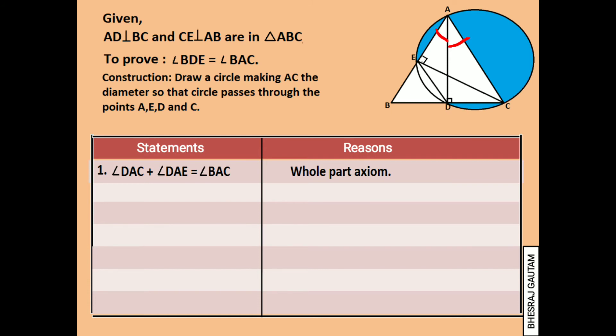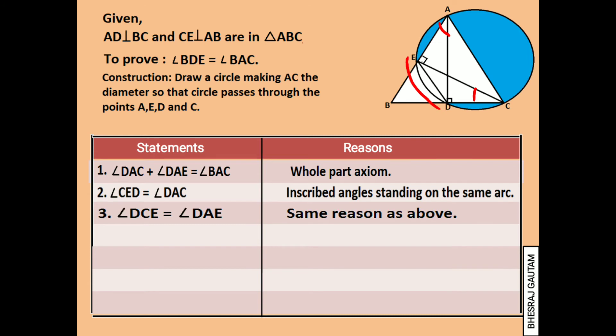Two angles standing on arc CD are angle CED and angle DAC, so they are always equal. Similar to statement two, two angles standing on arc DE are angle DCE and angle DAE, so they are also equal.